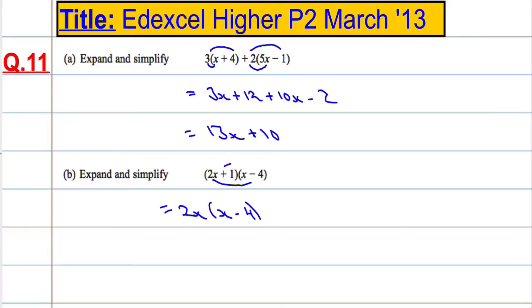Plus the 1 times all of this. And this is pretty much no different from what we've done up here. 2x times x is 2x squared, 2x times 4, so we did 2x times x, then we did 2x times negative 4, negative 8x.